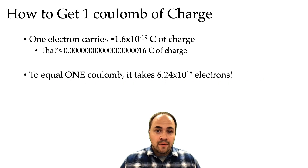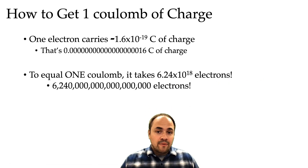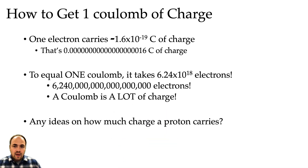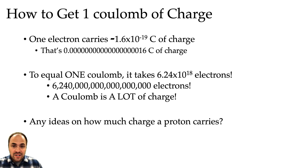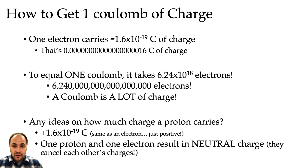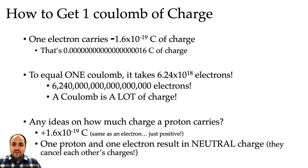A coulomb of charge is quite a bit of charge. As for protons — if you guessed that they carry an equal amount of charge as an electron but just positive, then you guessed right. A proton cancels out with an electron: if you put a proton and electron together their net charge would be neutral. Even though the proton has a much greater mass, it still carries the same amount of charge as the much less massive electron.